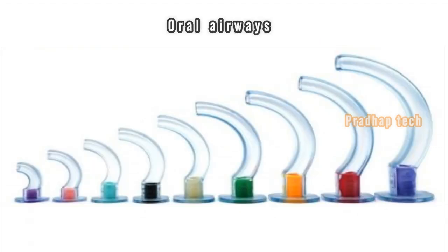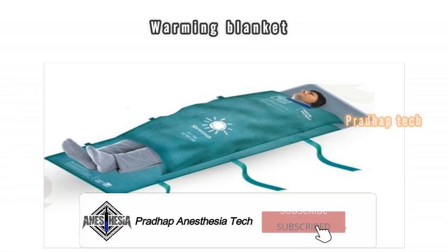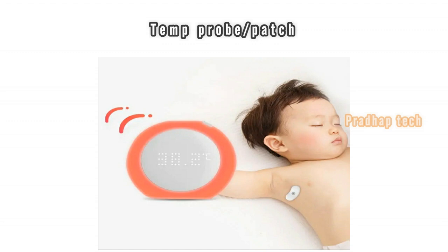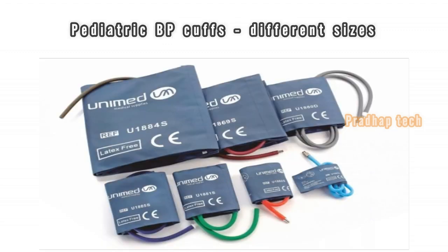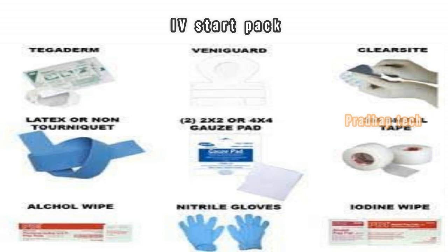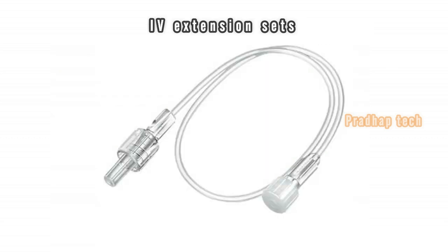Oral airways. Tongue depressor. Warming blanket. Temp probe or patch. Petite BP cuffs in different sizes. 3-lead ECG. Burotrol type of drip chamber that holds limited quantities of IV fluids. Extension sets.